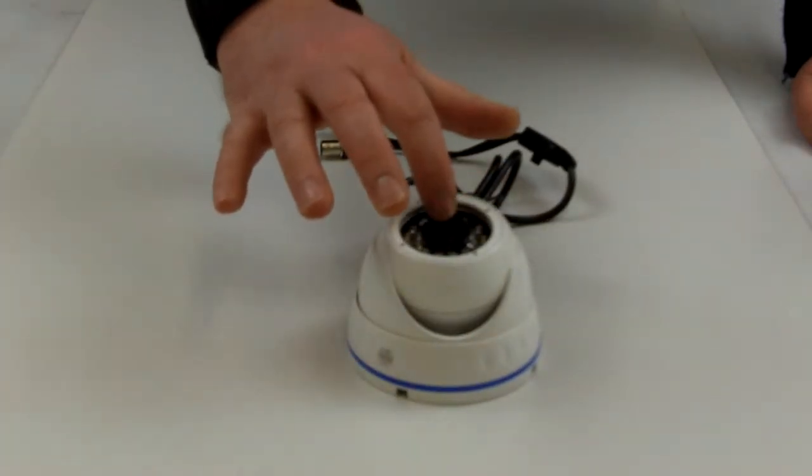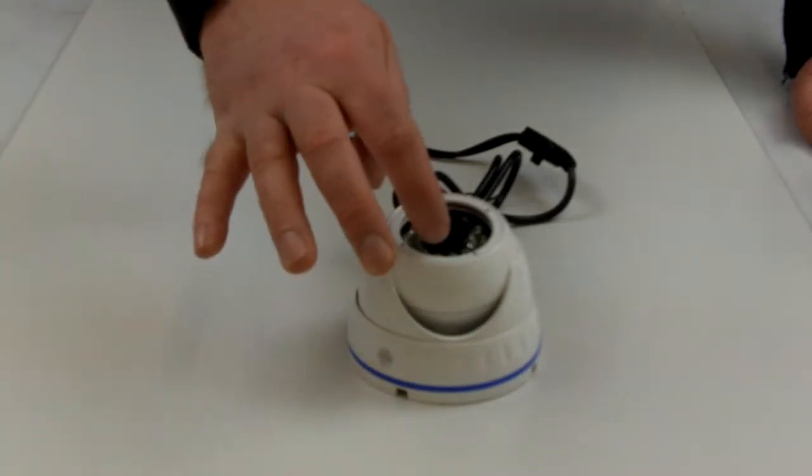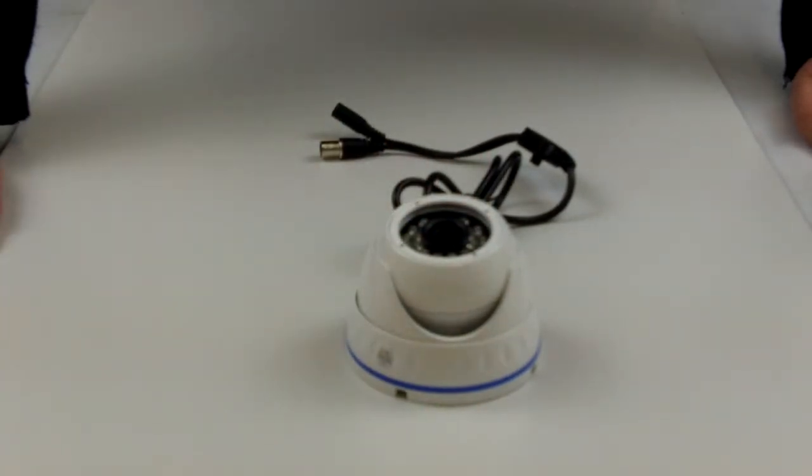There's a 3.6mm lens on the camera. This is surrounded by 24 infrared LEDs. These provide the night vision up to a maximum of 20m in complete darkness.